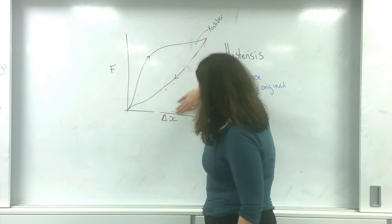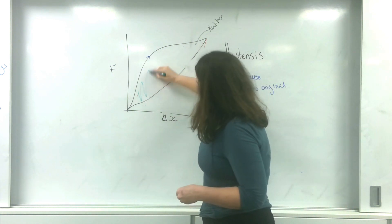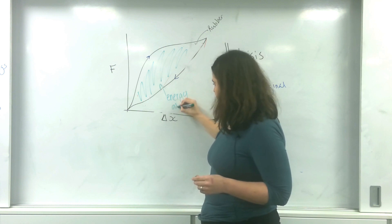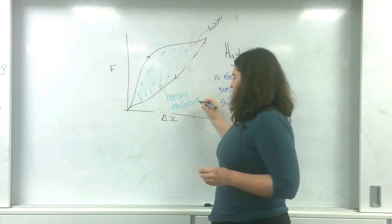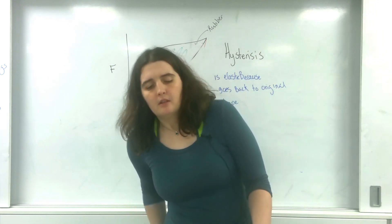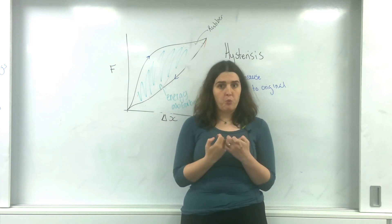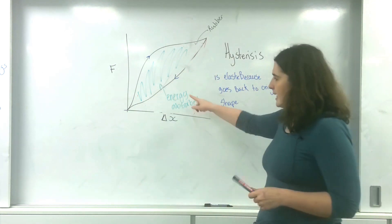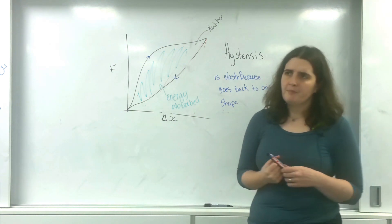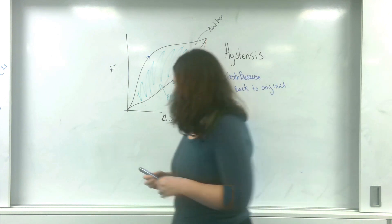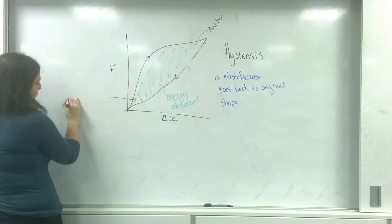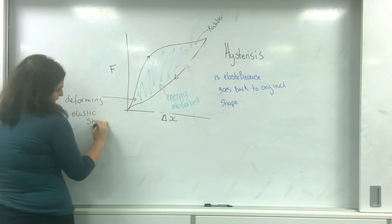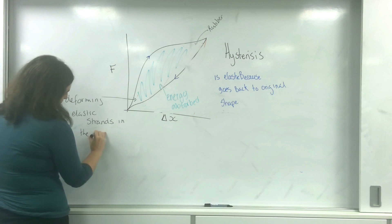This energy here is absorbed, and this is actually really important for hysteresis. You may have noticed that over time, when you stretch an elastic band, it gets warm and you start seeing white dots on it. This energy that's absorbed is deforming molecules — deforming the elastic strands in the elastomer.